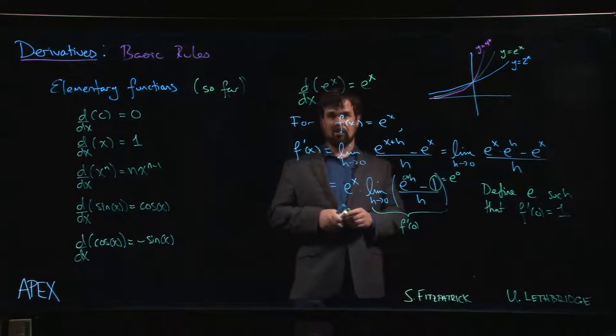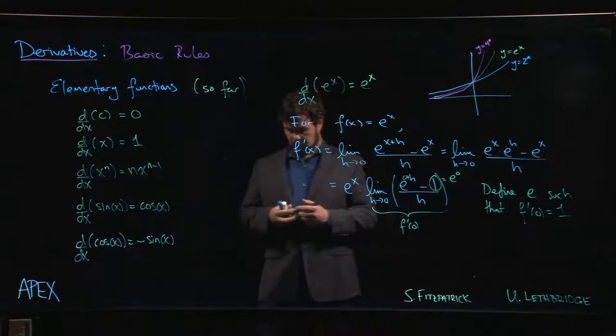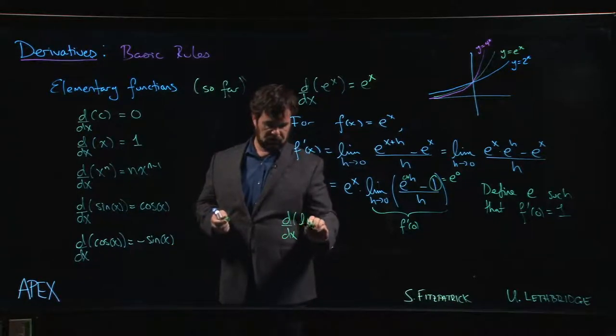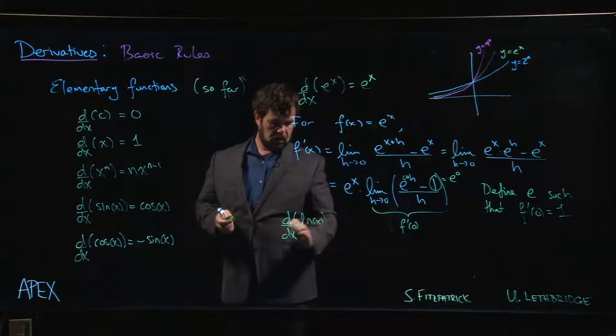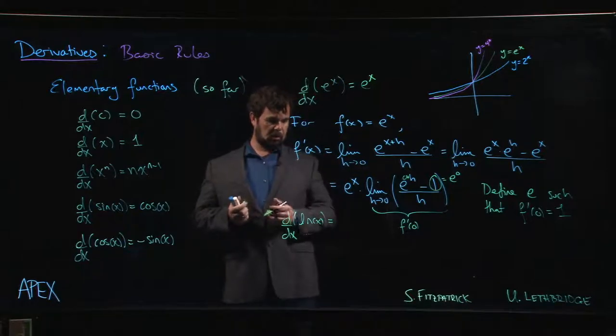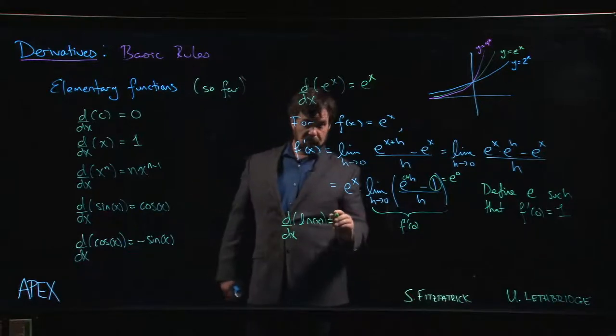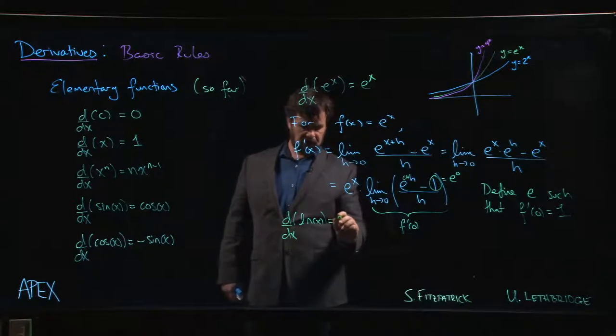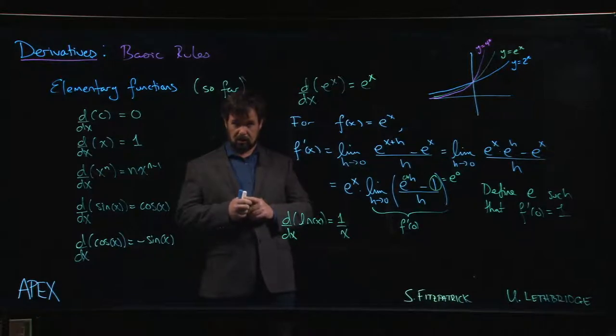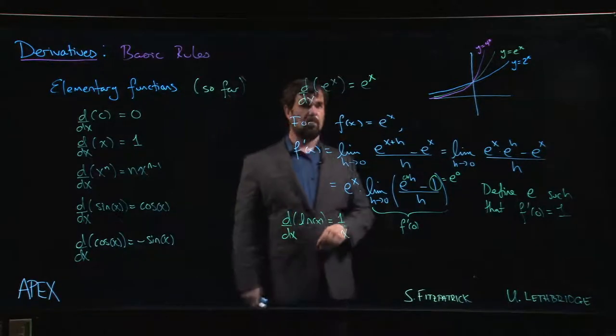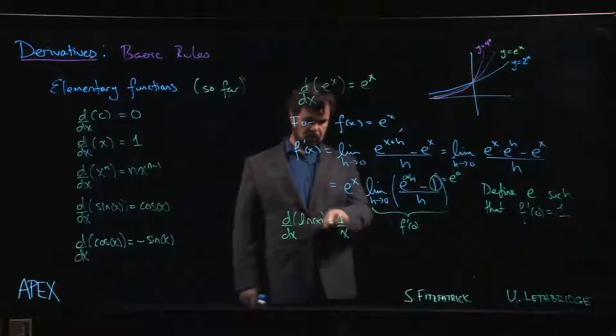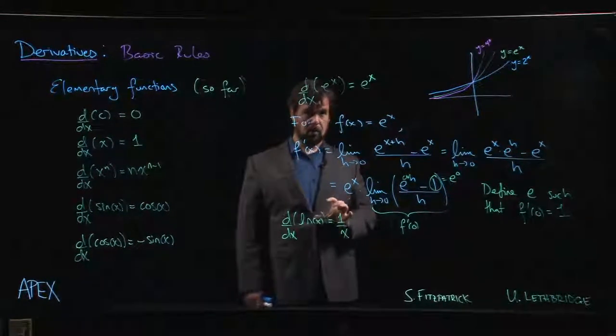The only other one we should put on our list and we can't actually, you know, do this yet. We don't have the tools yet to convince you that this is true. But the natural log is going to show up in your exercises. And we want to have as many functions at our disposal as possible, as early as possible, especially for those of you doing, you know, physics, engineering, things like that. The derivative of the natural log is 1 over x. We'll be able to show that once we've done the chain rule, once we've talked about derivatives of inverse functions, we'll be able to actually establish this a little bit more rigorously.